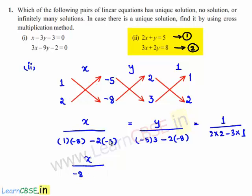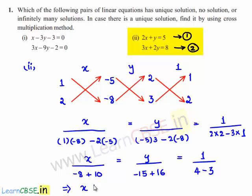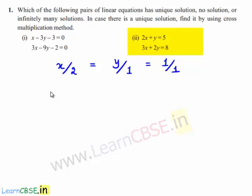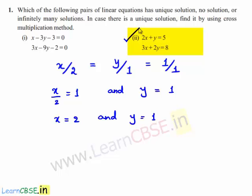This gives x / (-8 + 10) = y / (-15 + 16) = 1 / (4 - 3), so x/2 = y/1 = 1/1. Therefore x = 2 and y = 1. The solutions for the given set of linear equations are x = 2 and y = 1.